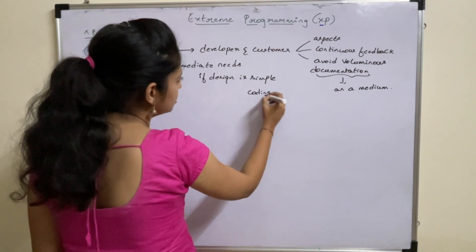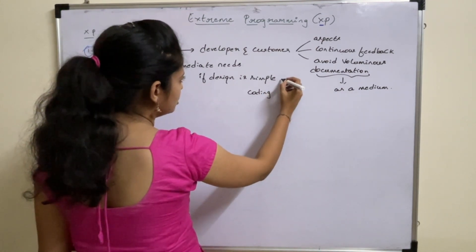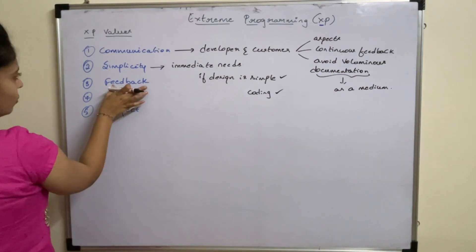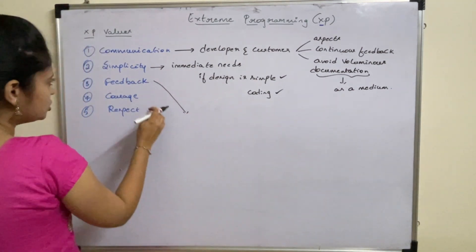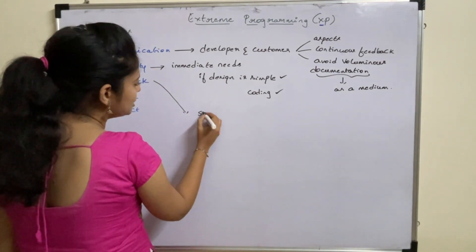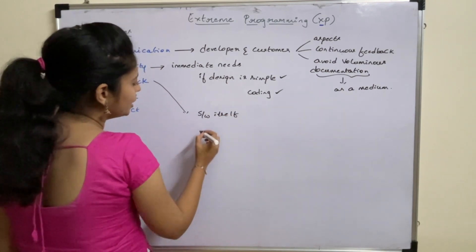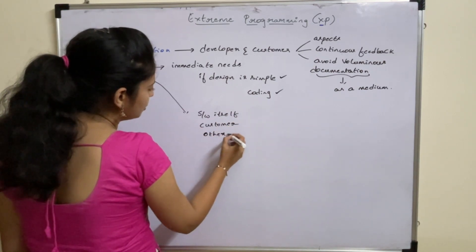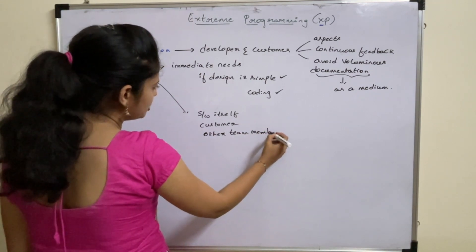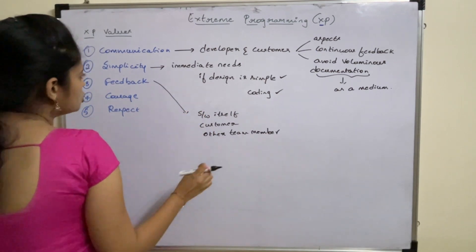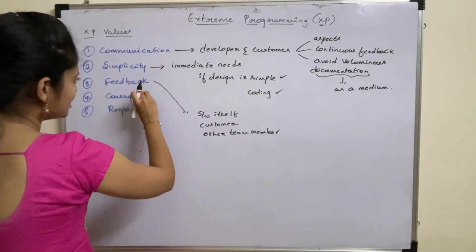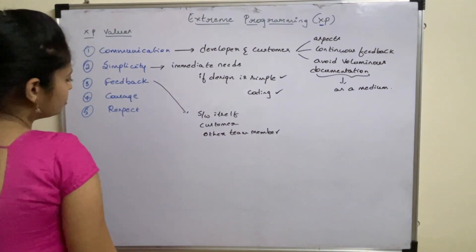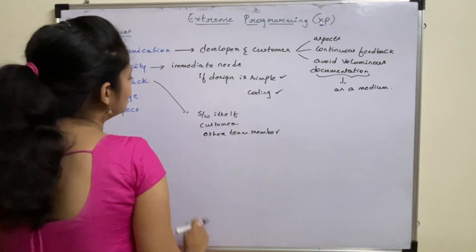If the design is simple, then coding also becomes easy. Next, coming to the third value: feedback. Feedback is derived from three sources — it can be derived from the software itself, from the customer, or from other team members. By designing and implementing an effective testing strategy, continuous feedback can be provided to the developer or the agile team.